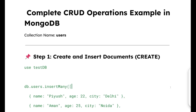Hi everyone. In this particular video, we are going to learn about the complete CRUD operation in MongoDB with the help of a very important example. CRUD stands for create, read, update and delete. These are all operations that we do with a document that we store in MongoDB. We will start with create, then move to read, then to update, and then to delete. Let's start creating or inserting a document.